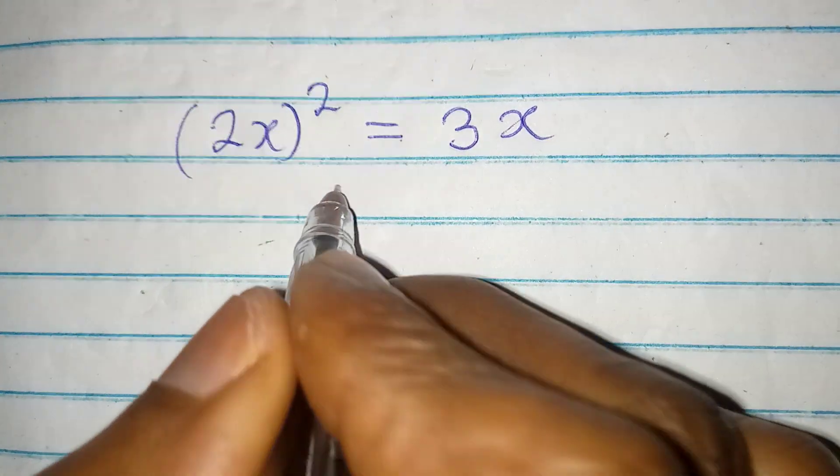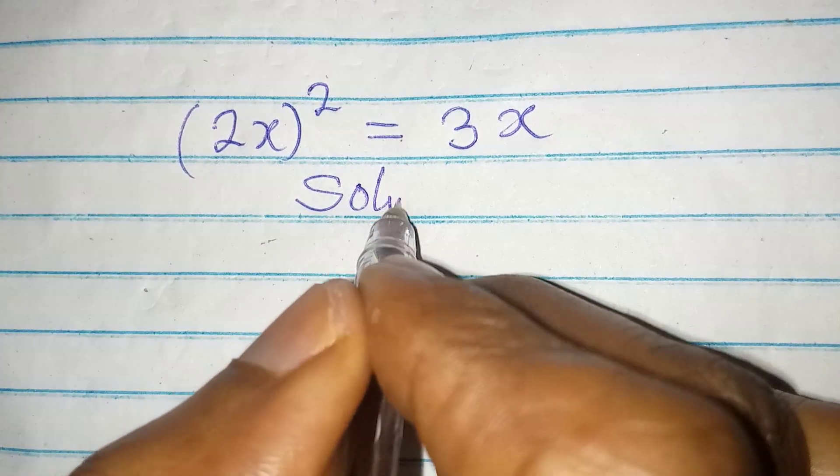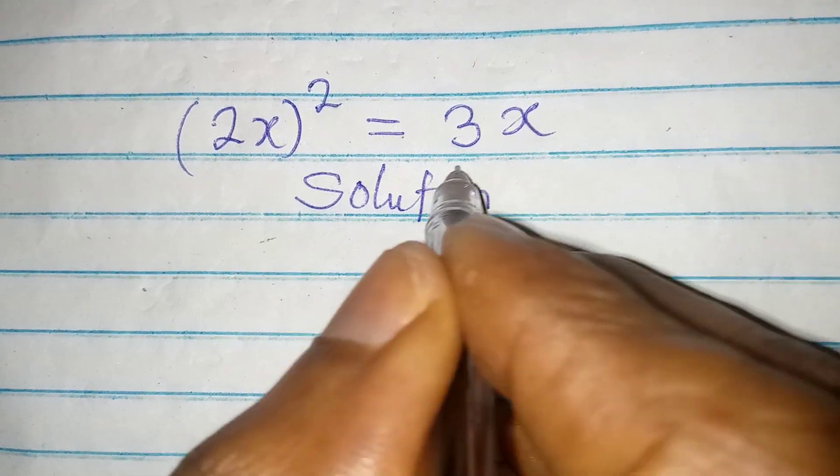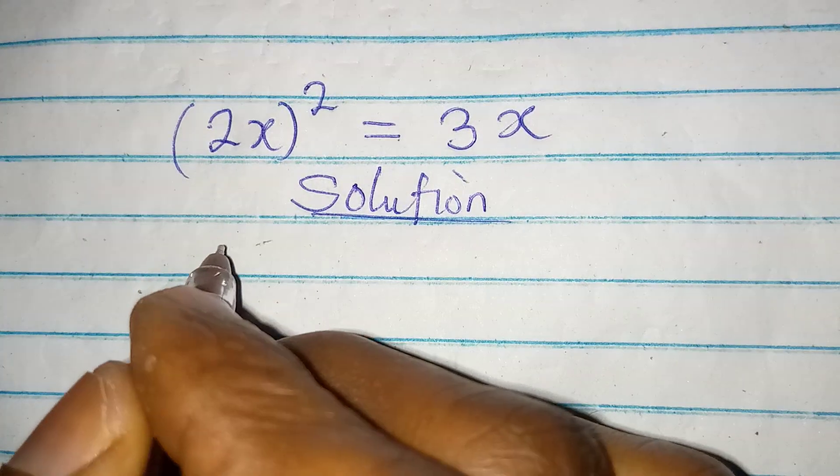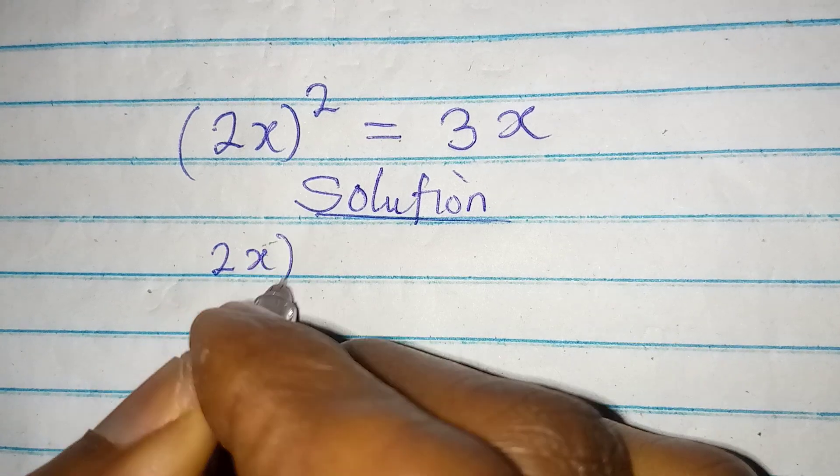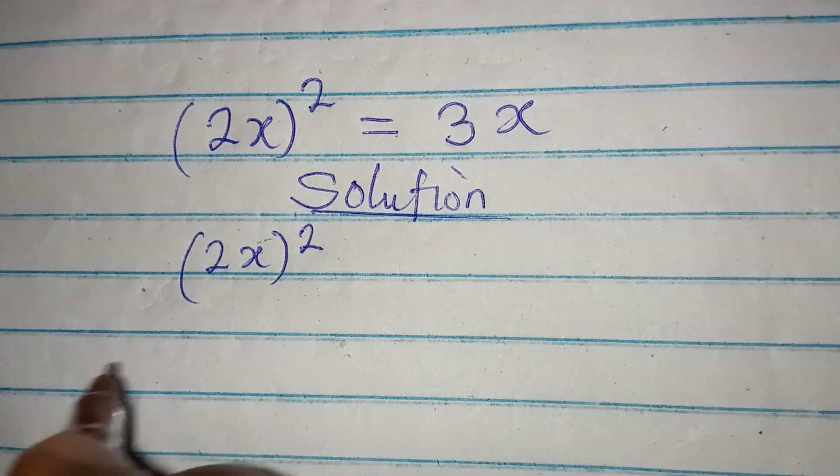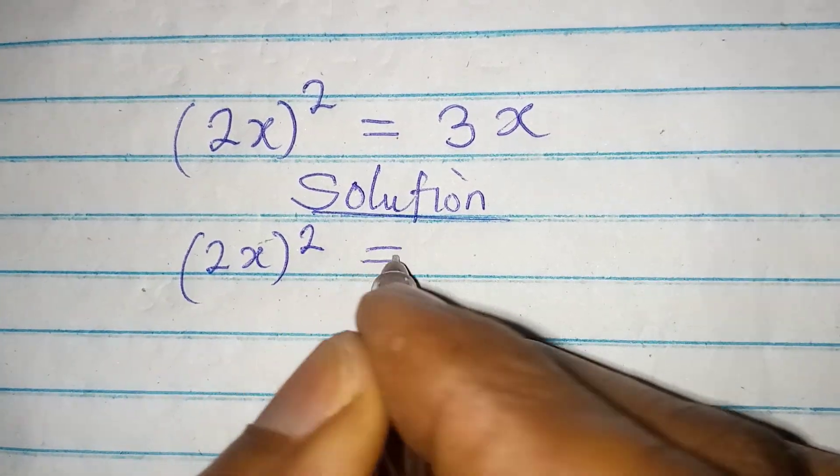Hello everyone, let's provide a solution to this problem. We have (2x)² = 3x.